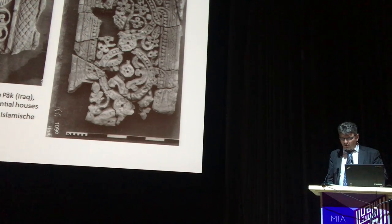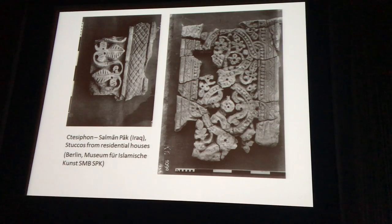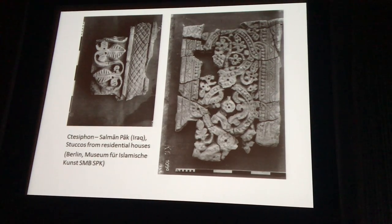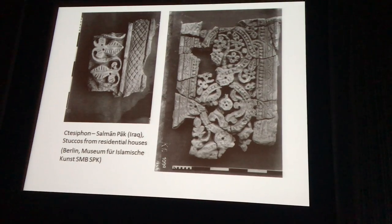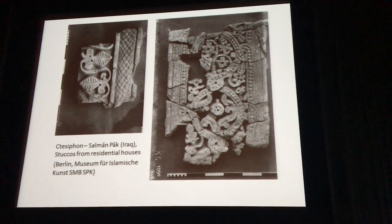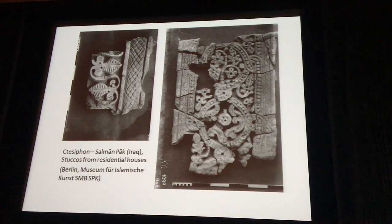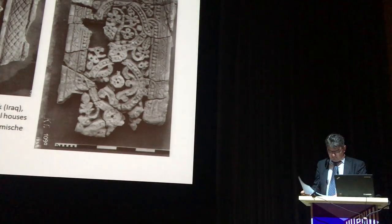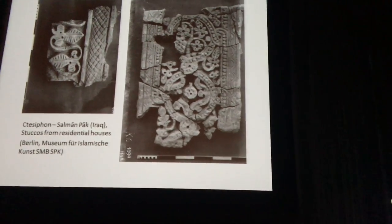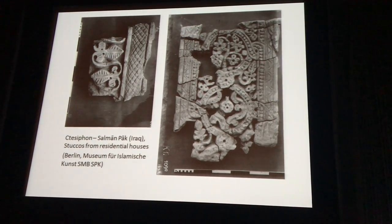Either late Sasanian or early Islamic, with a very similar set of forms. We can see that there was a common language of stucco in the regions of Iraq and Iran that belonged to the Sasanian Empire, and that were later inherited by Islamic culture, becoming part of early Islamic art and architectural decoration in the early Islamic period.